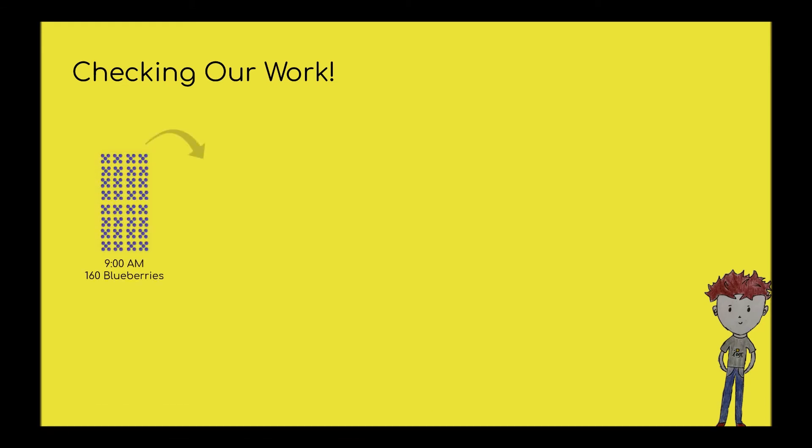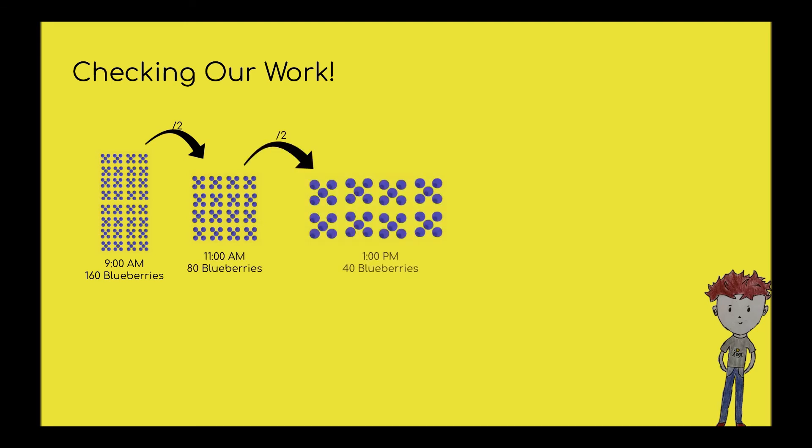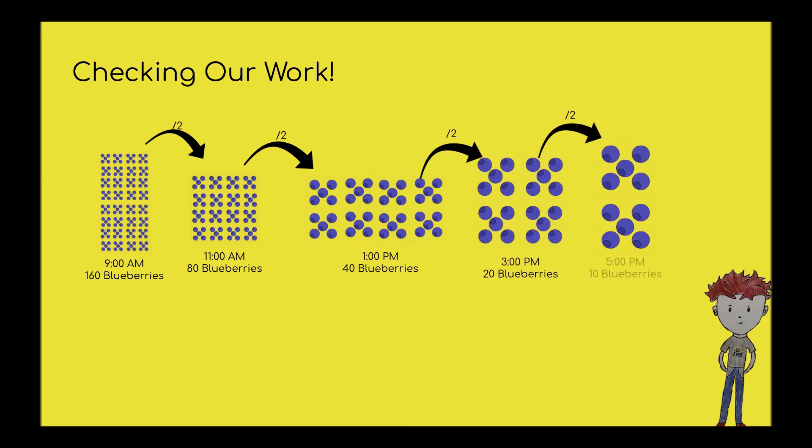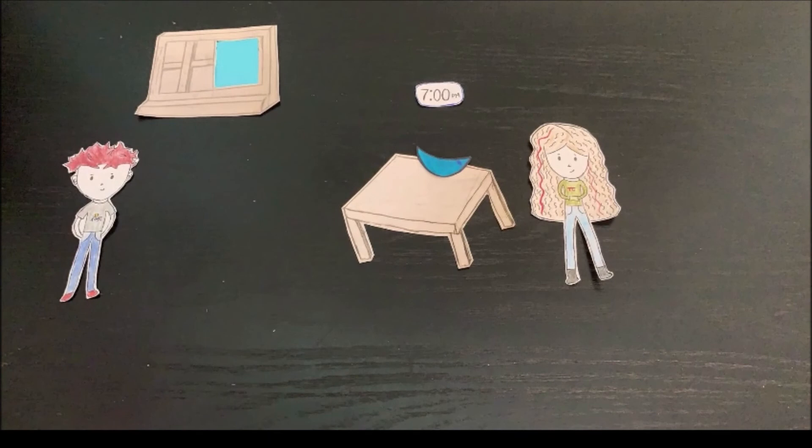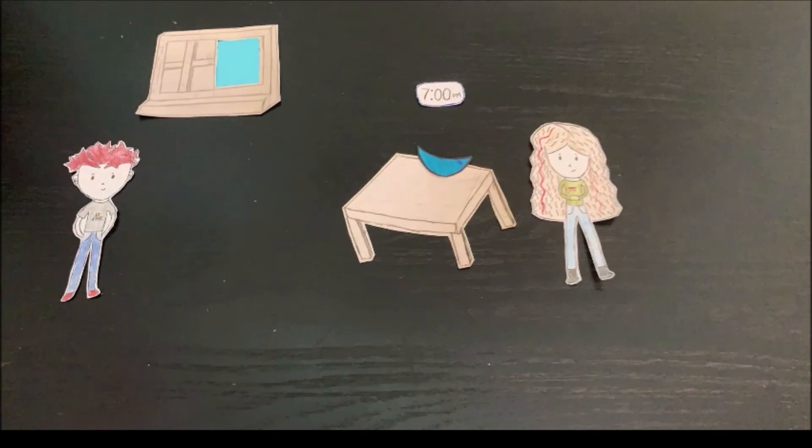At 9am we had 160 blueberries. At 11 we'd have 80. At 1pm we'd have 40. At 3pm we'd have 20. And at 5pm we'd have 10. And finally, at 7pm we'd have 5. So now we know for certain, you need 160 blueberries for your pie.